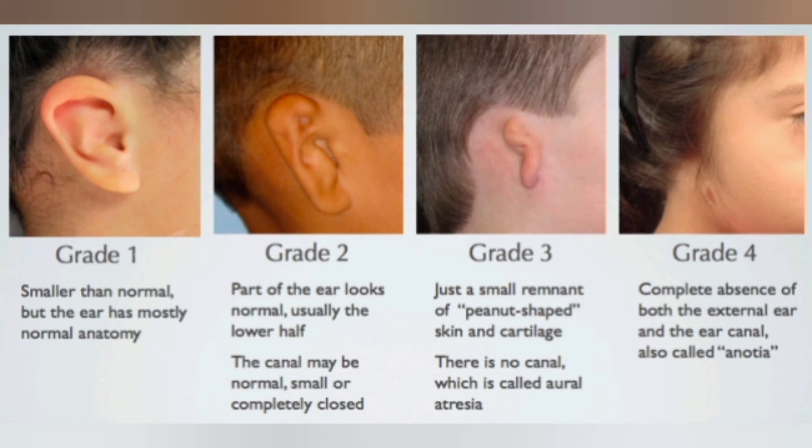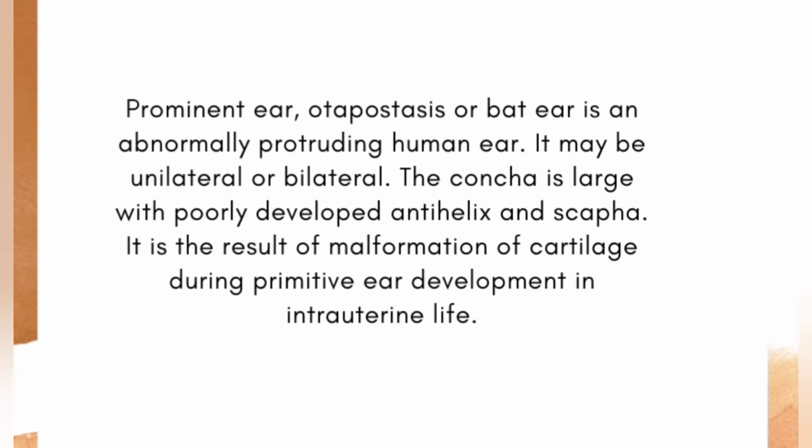Bat ear, or prominent ear, or otapostasis, is an abnormally protruding human ear. It may be unilateral or bilateral. In general, the concha is large with a poorly developed antihelix and scapha. It is the result of malformation of cartilage during primitive ear development in intrauterine life.